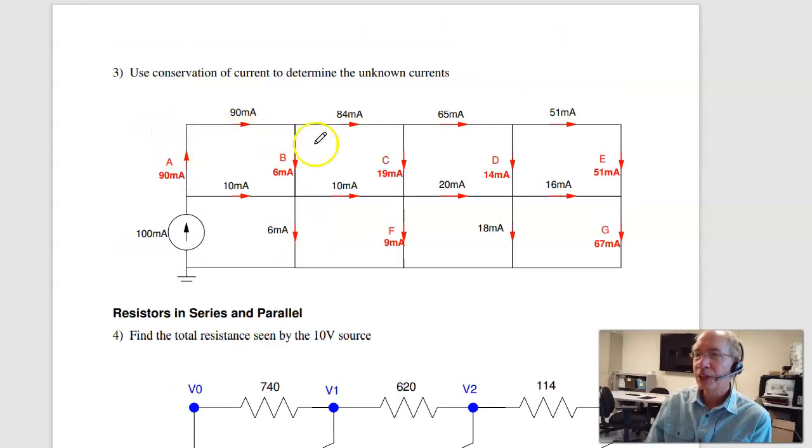Conservation of current. Current in equals current out. So right here, I've got 90 amps out. I have to have 90 milliamps in. 100 milliamps in, 10 out. This has to be 90. For B, 90 in, it's got to be 90 out. So B plus 84 is 90. B is 6.